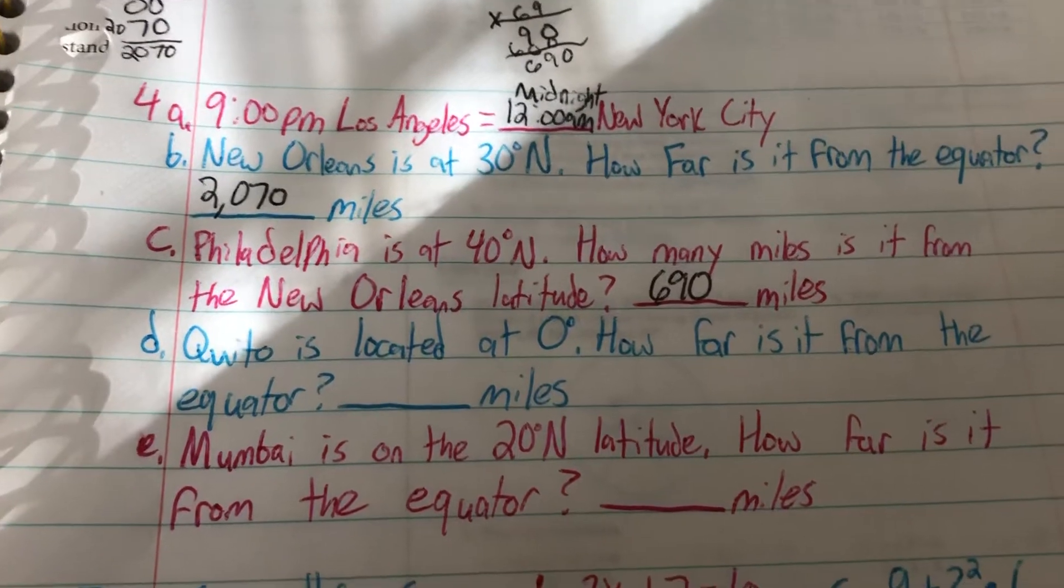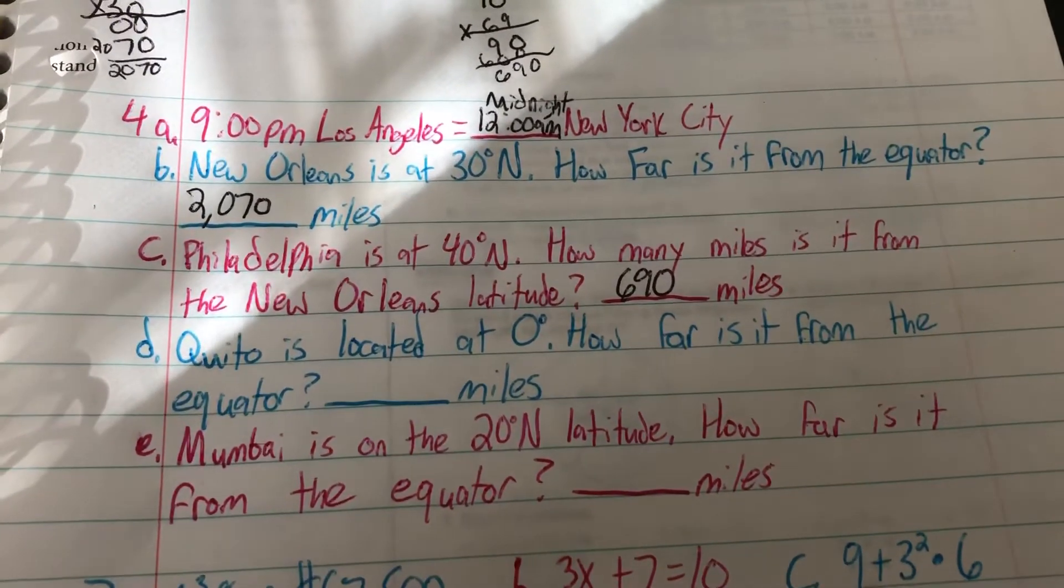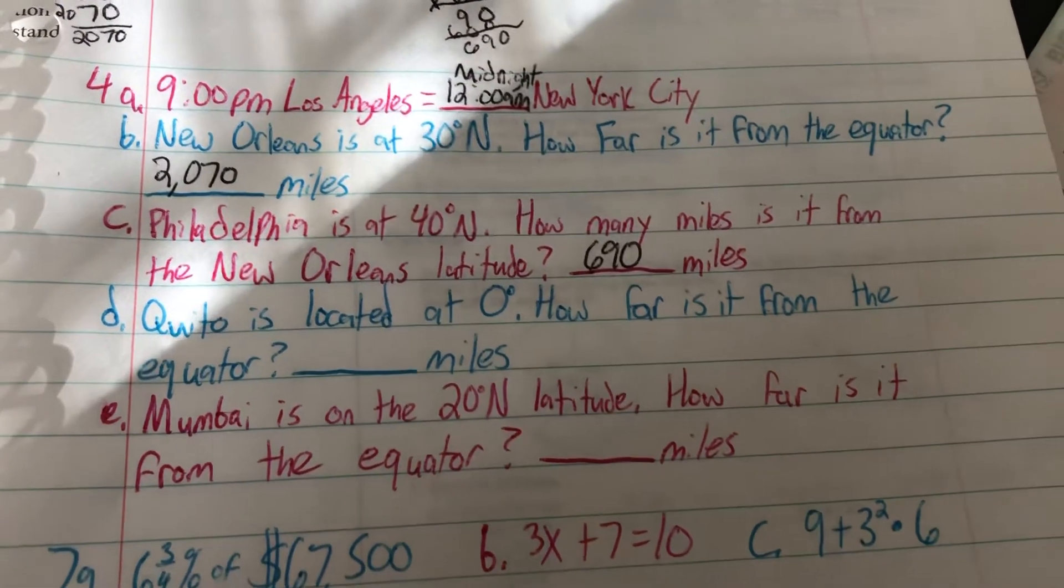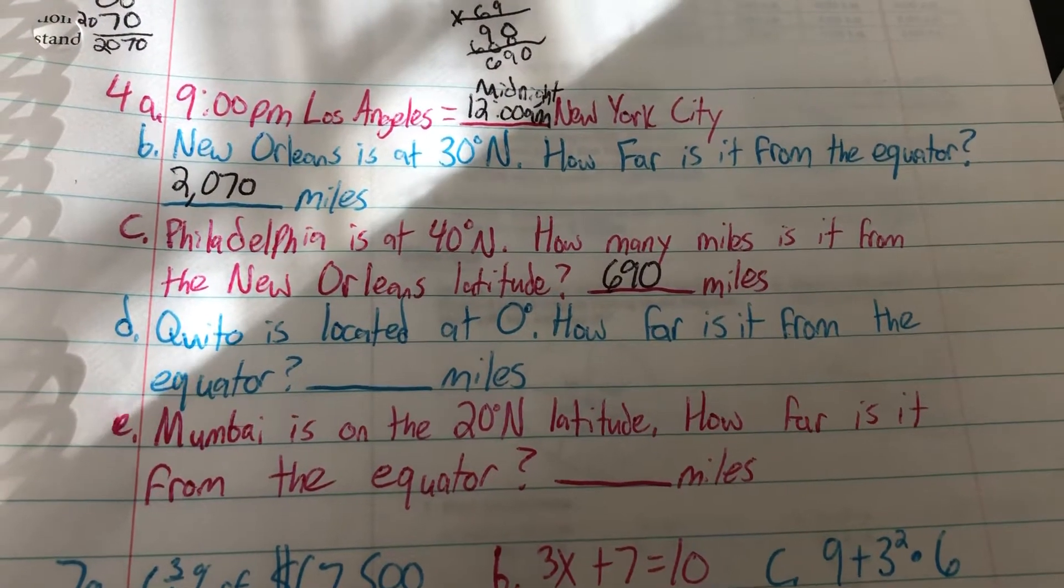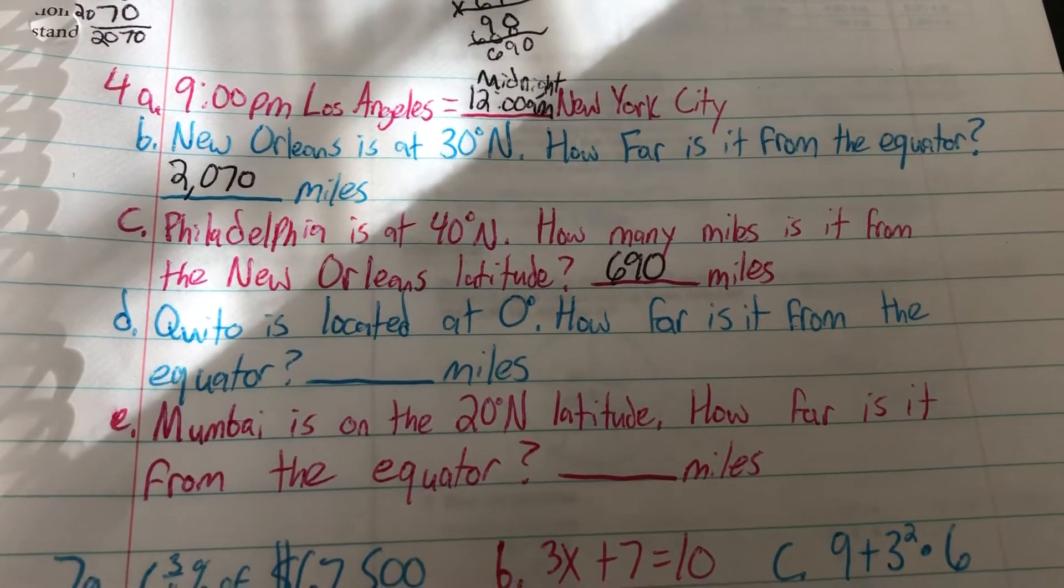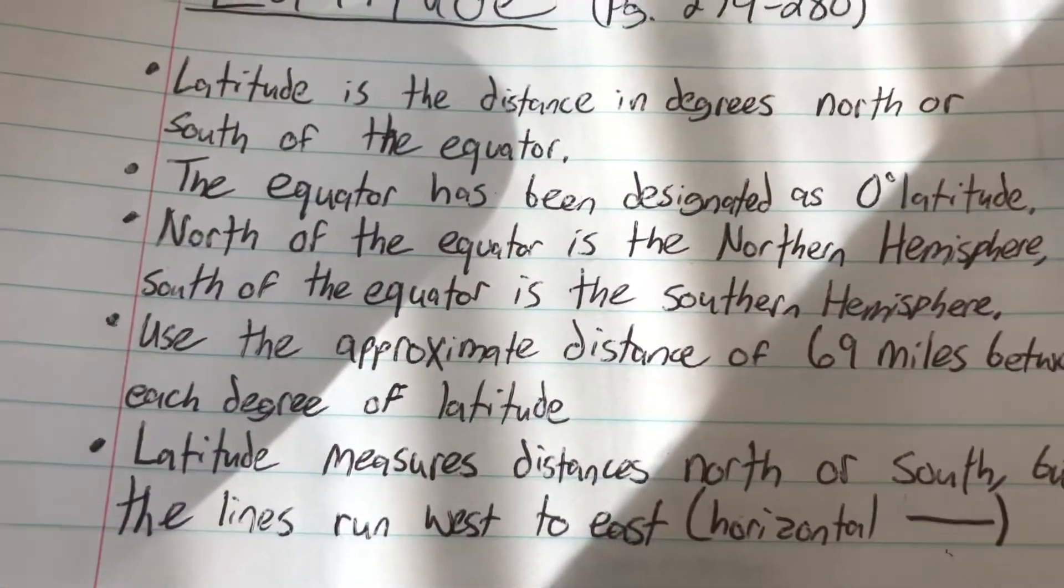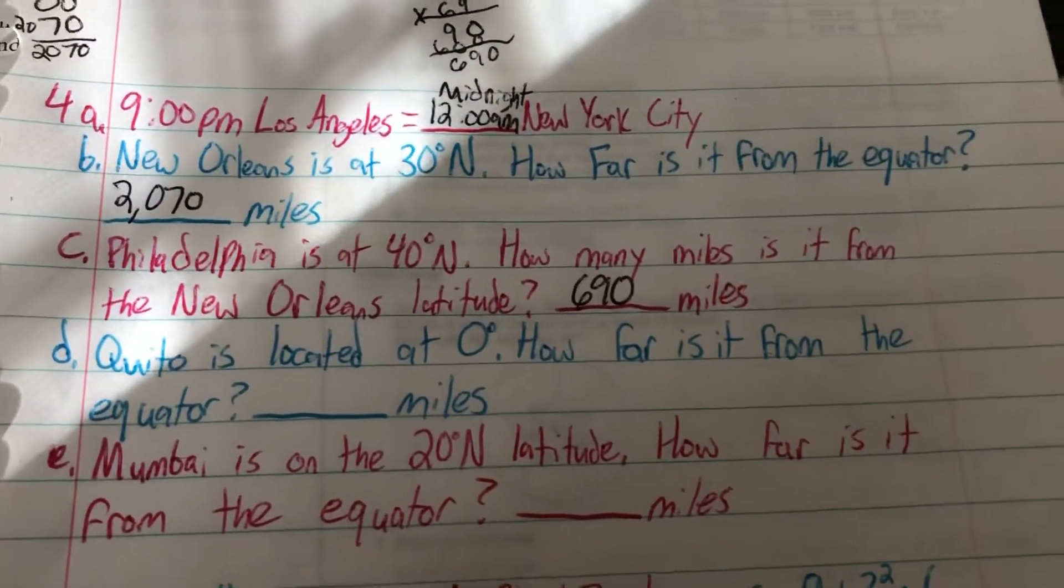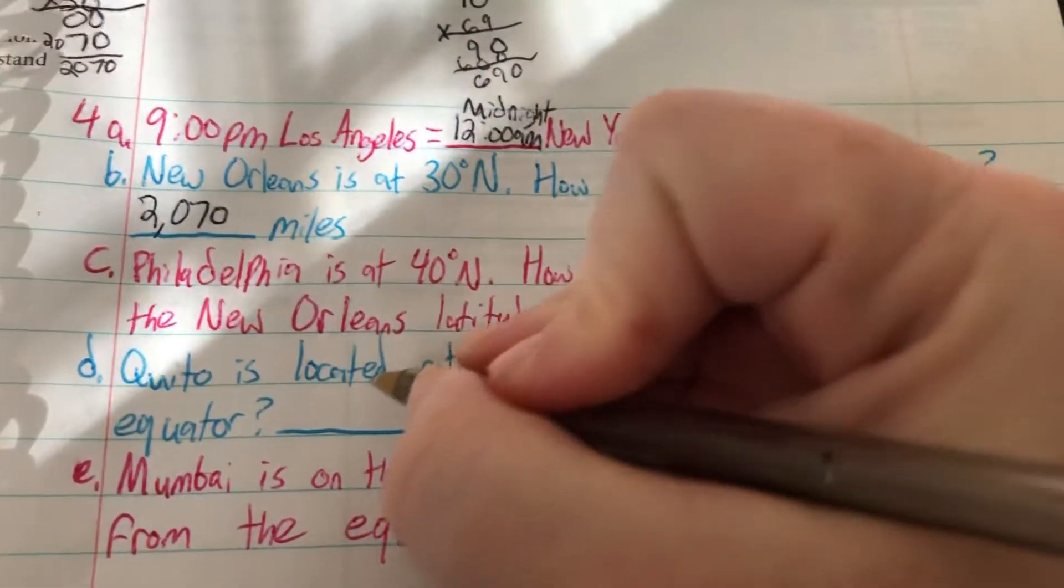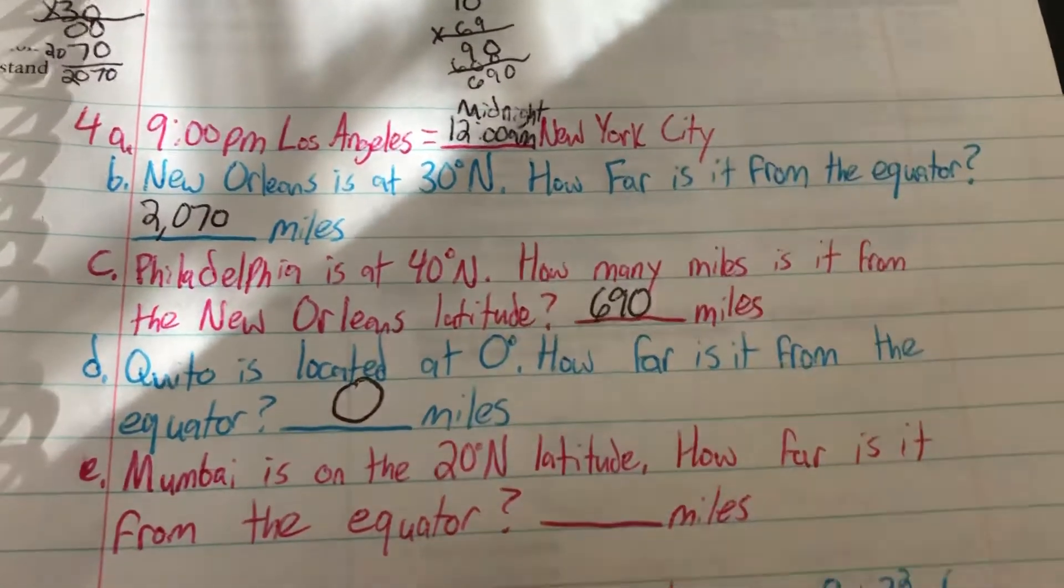Quito, which is in South America, in Ecuador, is located at 0 degrees latitude. How far is it from the equator? Well, if we remember from earlier, the equator is at 0 degrees latitude. So if Quito is also at 0 degrees, then it is at the equator. So it is 0 miles away from it.